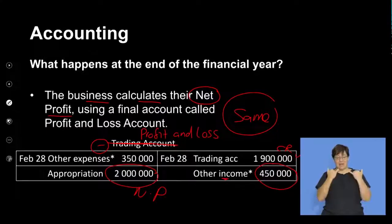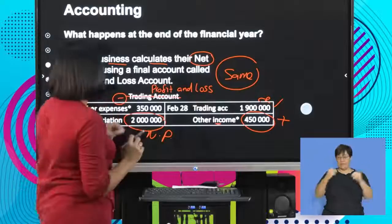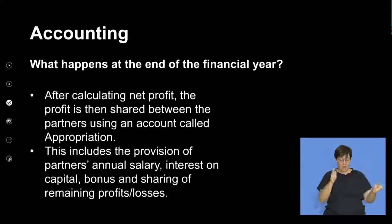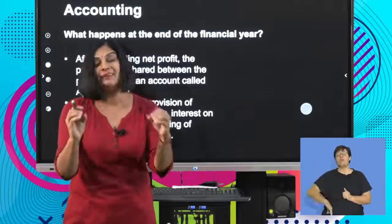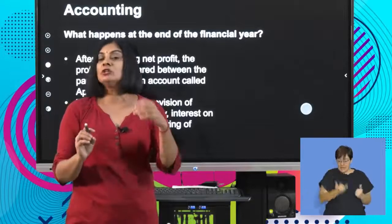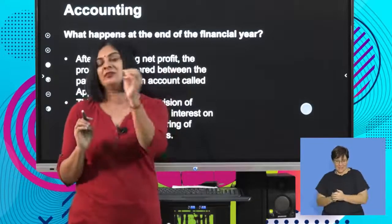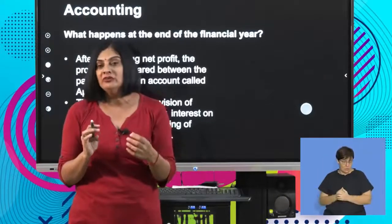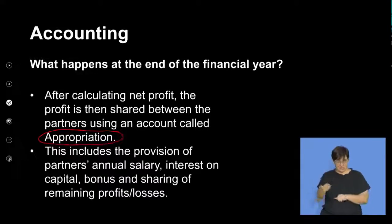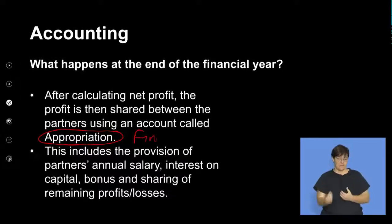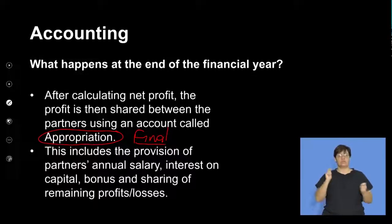Now comes the change. We've calculated net profit, and now our partners are saying we have to share that net profit — we're going to appropriate that net profit. And how are we going to do this? By using what we call an appropriation account. So we've got one more final account, and that final account is called the appropriation account. Now comes the changes.